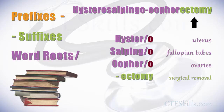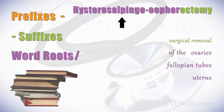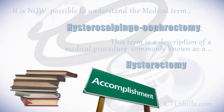Continuing the pattern of how to decipher a medical term, reading from right to left: surgical removal of ovaries, fallopian tubes, and uterus. It is now possible to understand hysterosalpingooophorectomy. This term is a description of a medical procedure commonly known as a hysterectomy.